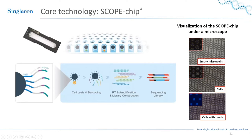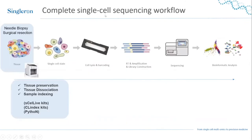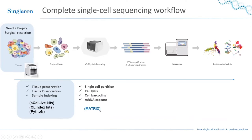Once you have the bead and cell in the microwell, you add the cell lysis buffer which disrupts the cell membrane and releases the mRNA, allowing it to bind to the poly-T sequences on the bead. This is followed by reverse transcription, amplification, and library construction. Once you have a sequencing library you can sequence your sample. Importantly, loading the chip requires no instrument beyond a P200 pipette, so it's very easy to use. Single Runs also offers a complete workflow including tissue preservation, dissociation, and optional automated loading using the Matrix instrument.